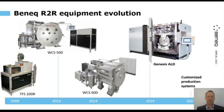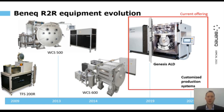We started to move to real roll-to-roll systems in 2013 and 2014, two different generations of equipment. And finally, a couple of years back, we started the collaboration with E&R and built what we now call the Genesis ALD system together. That's our kind of joint offering. In addition to the standard system, we also provide customized production systems.